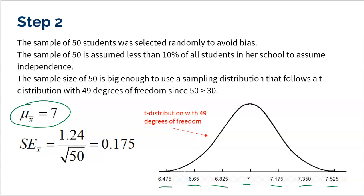Now I do have to check those conditions, of course. So the only way my center is truly going to be seven is if the 50 students were selected randomly to avoid bias. Check, check. The sample of 50 has to be assumed less than 10% of all students. It said it was a pretty big school, so I'm pretty confident that 50 is under 10% to assume independence.